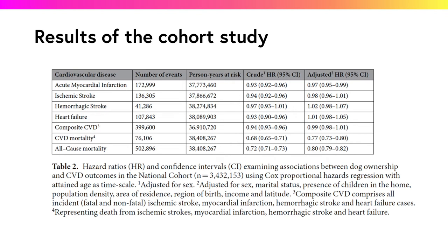Hazard ratios are interpreted as the chance of an event occurring in one group — in this case dog owners — divided by the chance of the event occurring in another group, non-dog owners. A hazard ratio of 1 indicates no association between dog ownership and cardiovascular disease outcomes. We can see in the table that with the hazard ratios all being less than 1, it appears that dog ownership decreases the risk of these outcomes. In particular, the crude hazard ratios for cardiovascular disease mortality and all-cause mortality indicate that the risk of these two outcomes occurring in dog owners is reduced by 32% and 28% respectively — that is, 1 minus the hazard ratio expressed as a percentage.